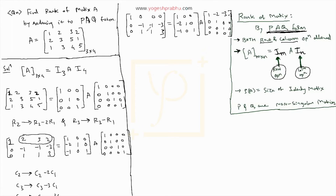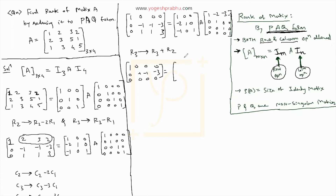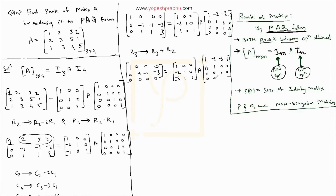Now to make the last row zero, we perform R3 becomes R3 plus R2. Adding the second row into the third row: first row stays 1 0 0 0, second row is 0 minus 1 minus 1 minus 3. Third row becomes 0. On the I₃ matrix: R3 plus R2 gives minus 1 plus minus 2 equals minus 3, then 0 plus 1 is 1, and 0 plus 1 is 1. I₄ remains unchanged.